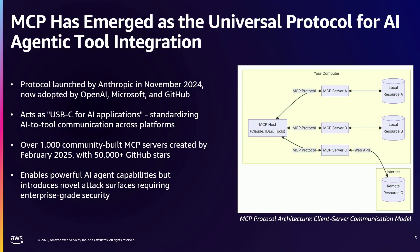MCP has emerged as a universal protocol for AI-agentic tool integration. The protocol launched by Anthropic in November 2024 is now adopted by OpenAI, Google, AWS, and many others. With MCP, the real aha moment has been that we're now able to give agents, or really these models, tools that they can invoke for external systems. This was released around November, mostly for local desktop usage for the Claude Desktop product, and has since evolved as an abstraction layer for enabling tool use in remote environments — that's the journey from where it started just in the past 12 months to where we are today.